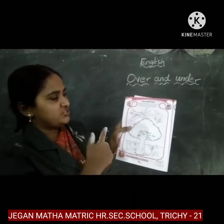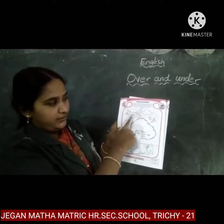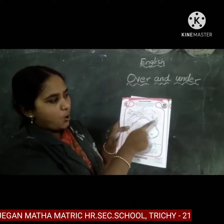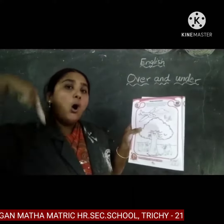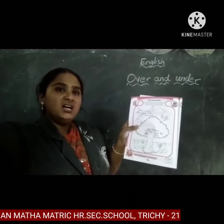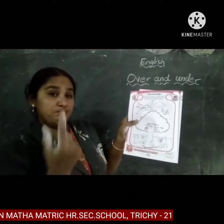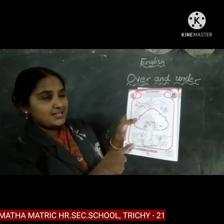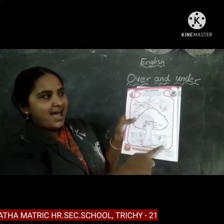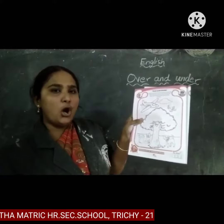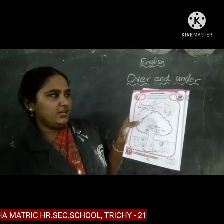Now, which is over the tree, children? The aeroplane, clouds, and the birds are over the tree. Now what is below the tree? The dustpan, cats, and the dog are below the tree.